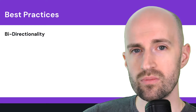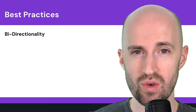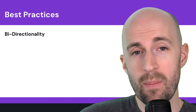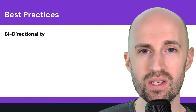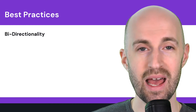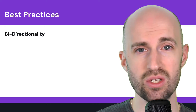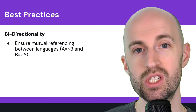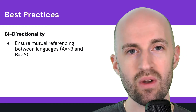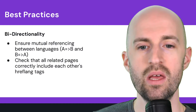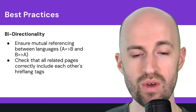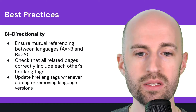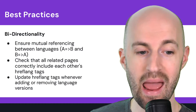That brings us to best practices. One of the most important things to recognize with hreflang tags is their bi-directional nature — on every page using hreflang tags, it needs to reference the other pages that it has alternative versions to: alternative languages, alternative regions, etc. You want to ensure mutual referencing between languages or regions, so page A references page B and vice versa. Check that all related pages correctly include each other's hreflang tags, and if you update content or add translations, make sure you update the hreflang tags to avoid errors.